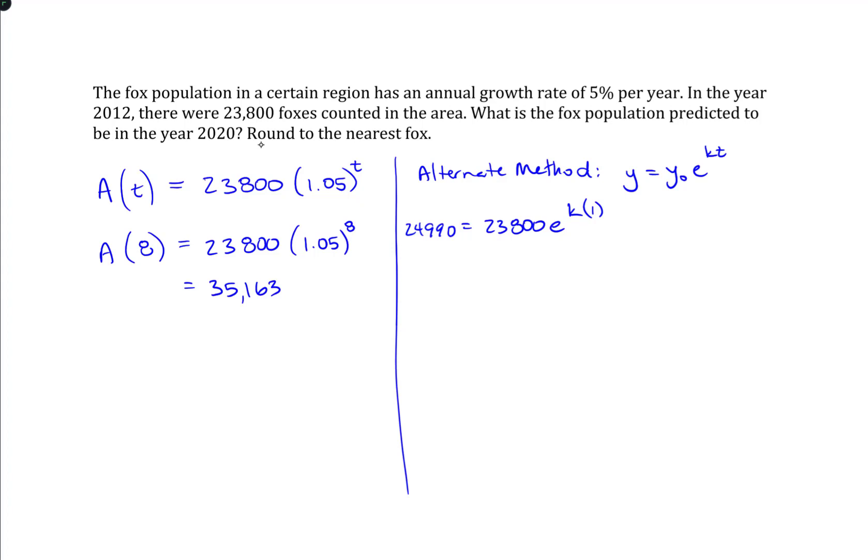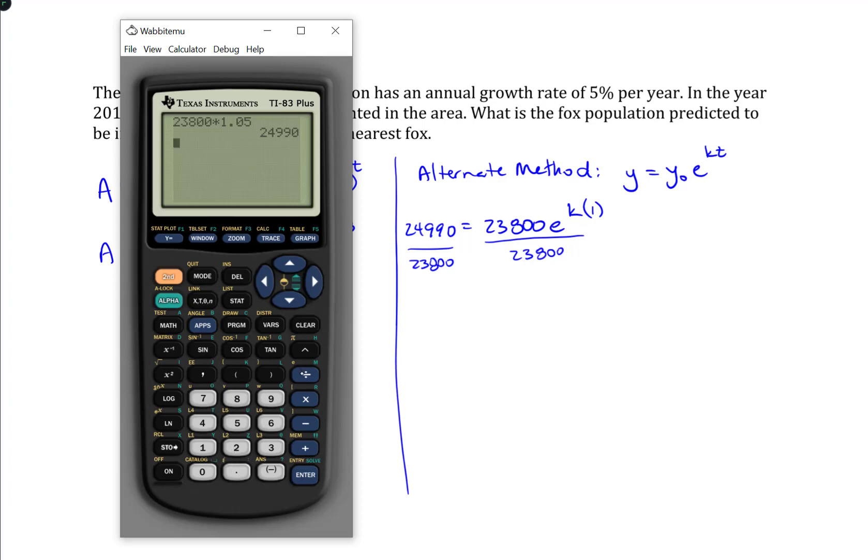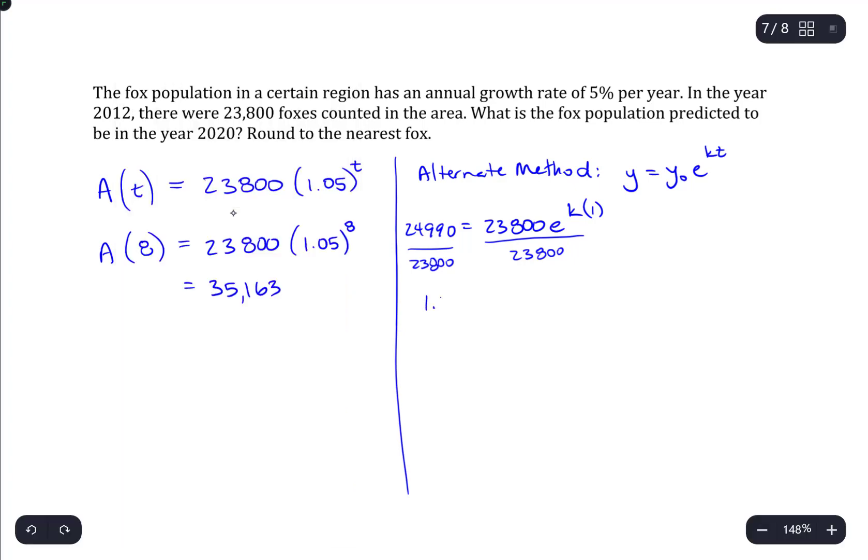And what we need to do is solve for k. That's our growth constant. So, if we divide both sides by 23,800. That's going to come down to 1.05. Because, I mean, that's exactly how we came up with these two numbers. It represents just an increase of 5%. So, 1.05 equals e to the k.